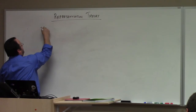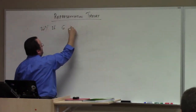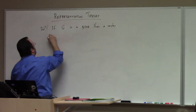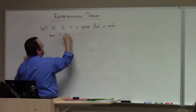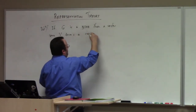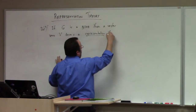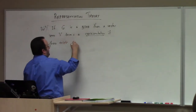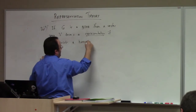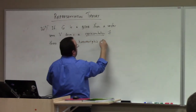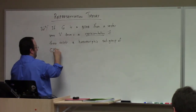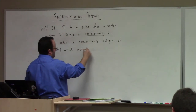Definition. If G is a group, then a vector space V forms a representation if there exists a homomorphic subgroup of GL(V) which acts on V.